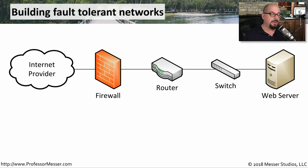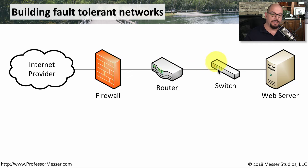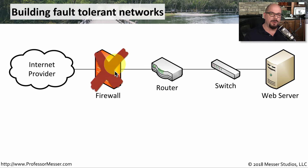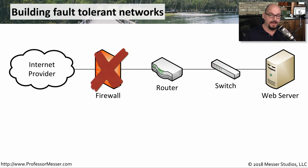Here's an example of fault tolerance. We have an internet provider connecting to our firewall, which connects to our internal router, then to our internal switch, and finally to our web server. But what if we have a problem with that firewall? Perhaps the power supply fails or the software has a problem. That single device being down affects the entire flow between the internet and that web server.